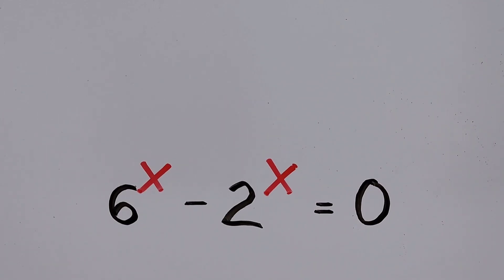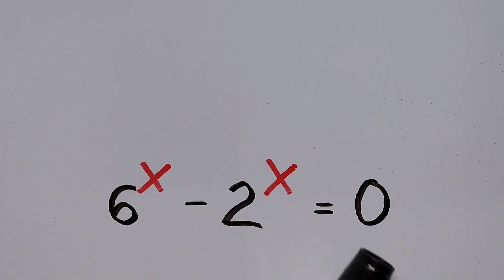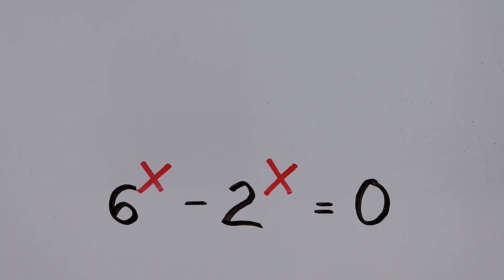Hello everyone, we have the exponential equation: 6 to the power of x minus 2 to the power of x equals zero. In this video we'll be solving for the value of x. For those new to my channel and those who have not subscribed yet, I would appreciate it if you can hit the like button and subscribe for more interesting and exciting videos. Thank you very much.